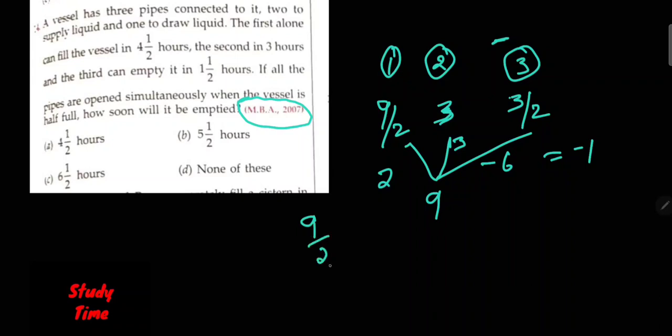Minus one, nine by two upon minus one gives nine by two, which is four and a half hours, or four and one by two hours. So option A is the answer.